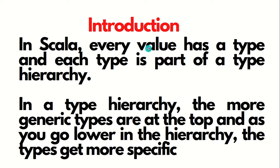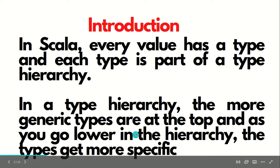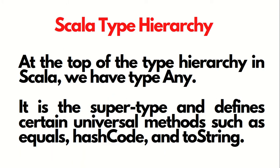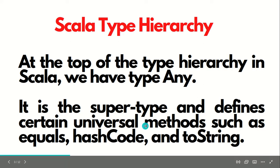In Scala, every value has a type and each type is a part of the type hierarchy. I'll be talking about the type hierarchy in the next slide. In a type hierarchy, the more generic types are at the very top, and when you go lower in the hierarchy, the types get more specific. At the top of the type hierarchy, we have a type Any. It's a supertype and defines certain universal methods such as equals, hashCode, and toString.